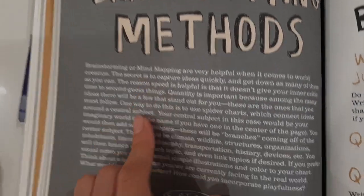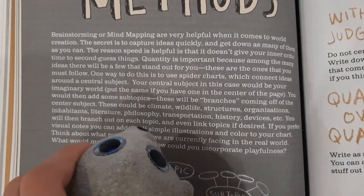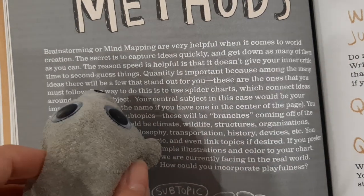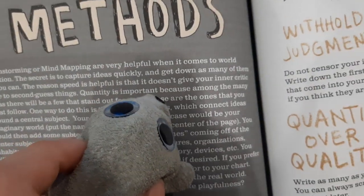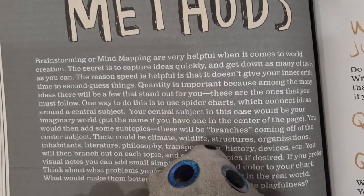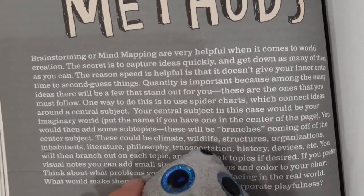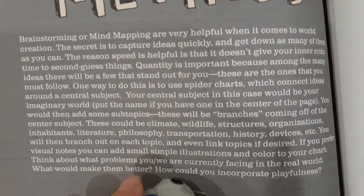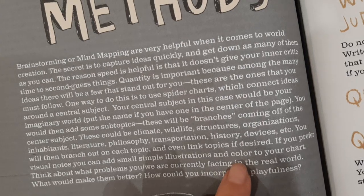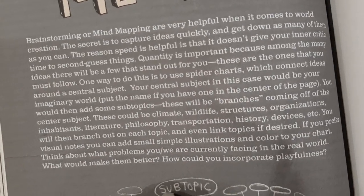Brainstorming methods. Brainstorming or mind mapping are very helpful when it comes to world creation. The secret is to capture ideas quickly and get as many of them done as you can. The reason speed is helpful is that it doesn't give your inner critic time to second-guess things. Quantity is important because among the many ideas, there will be a few that stand out. These are the ones you must follow. One way to do this is to use spider charts, which connect ideas around a central subject. Your central subject in this case would be your imaginary world — put the name, if you have one, in the centre of the page. You would then add some subjects as branches: climate, wildlife, structures, organizations, inhabitants.